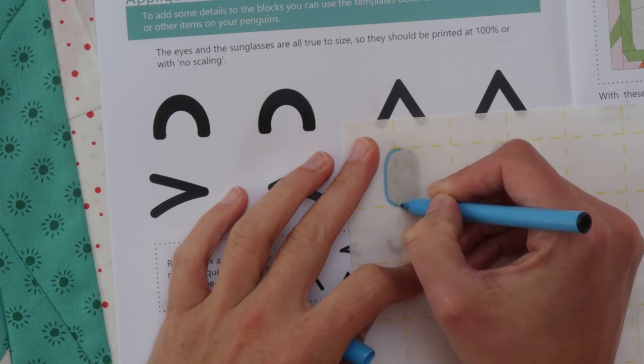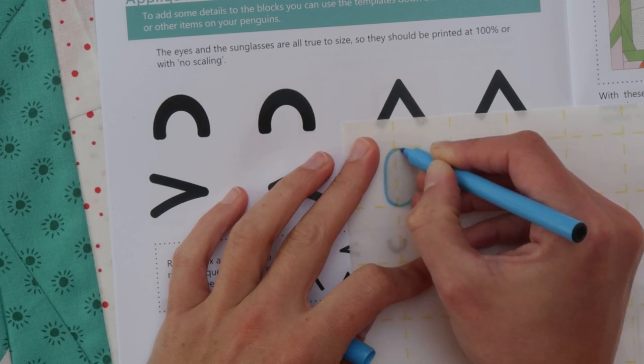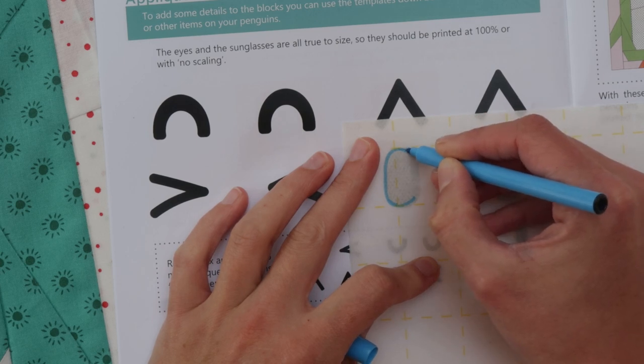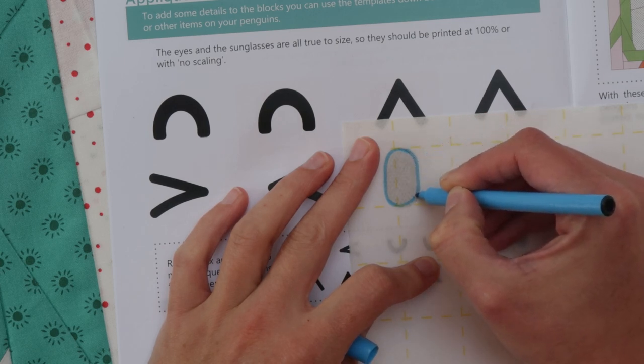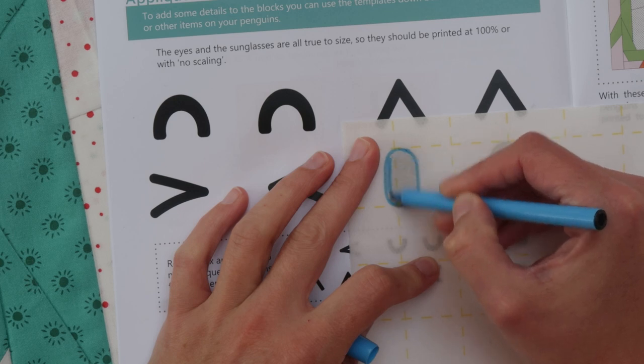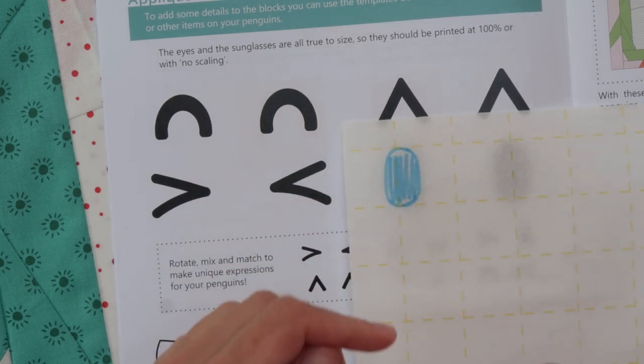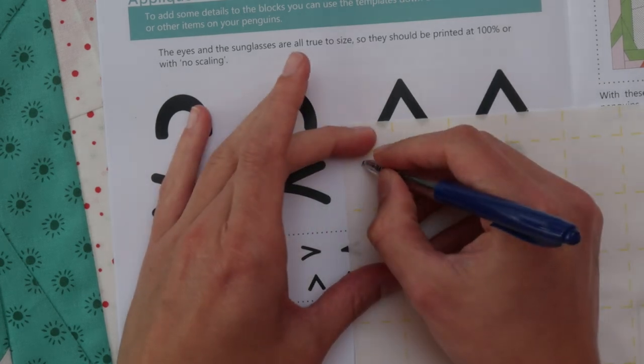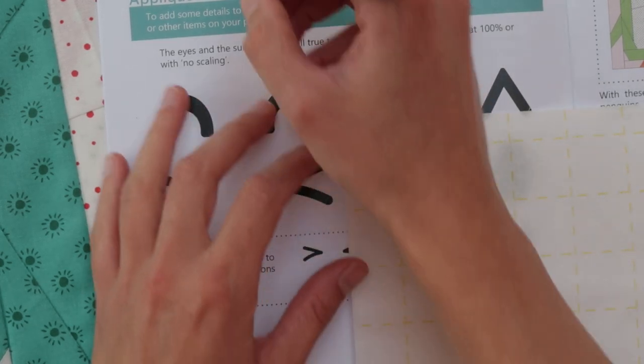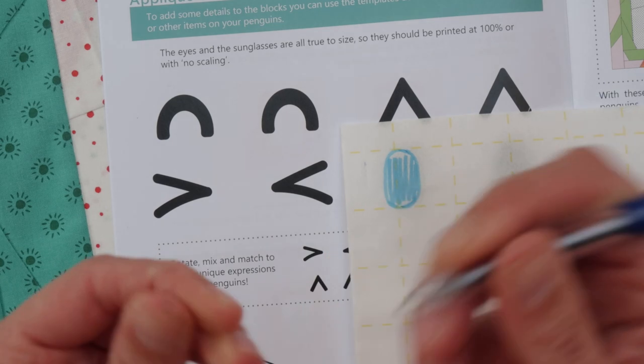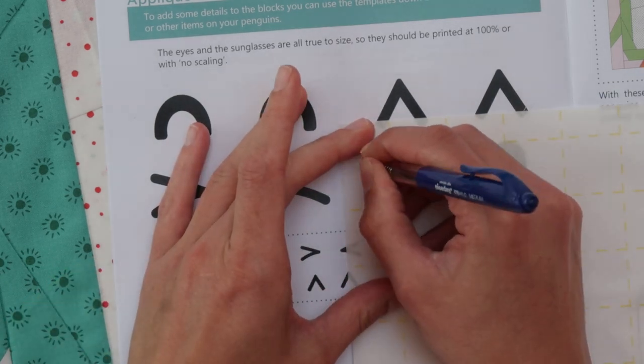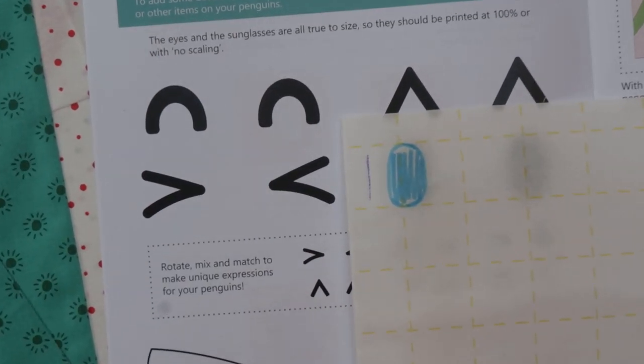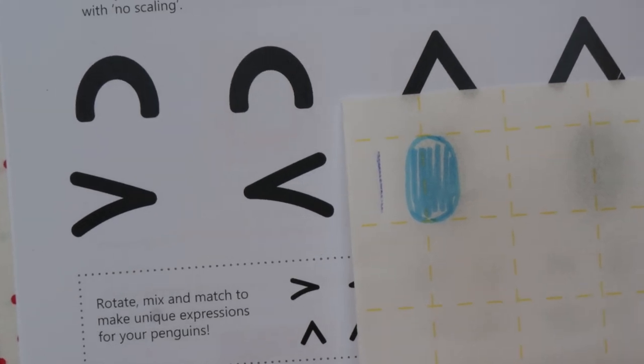One little tip with the steam a seam is to use a marker instead of a pen, because with a marker you don't have to press as hard to get it on to the paper. Whereas when you use a pen, the line will get slightly wobbly.